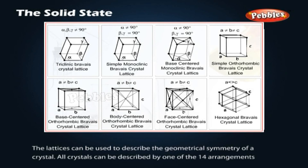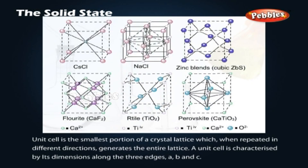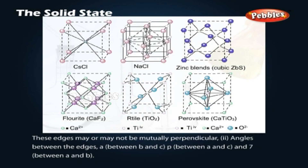All crystals can be described by one of the 14 arrangement unit cells. A unit cell is the smallest portion of a crystal lattice which, when repeated in different directions, generates the entire lattice. A unit cell is characterized by its dimensions along the three edges A, B, and C. These edges may or may not be mutually perpendicular. The angles between the edges are: alpha between B and C, beta between A and C, and gamma between A and B.